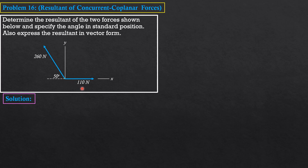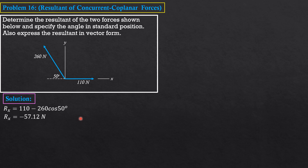That's the first method — the component method. The magnitude of the resultant is the square root of Rx² plus Ry². For the x-component: Rx = 110 minus 260 cosine 50°, which gives Rx equal to negative 57.12 Newtons.